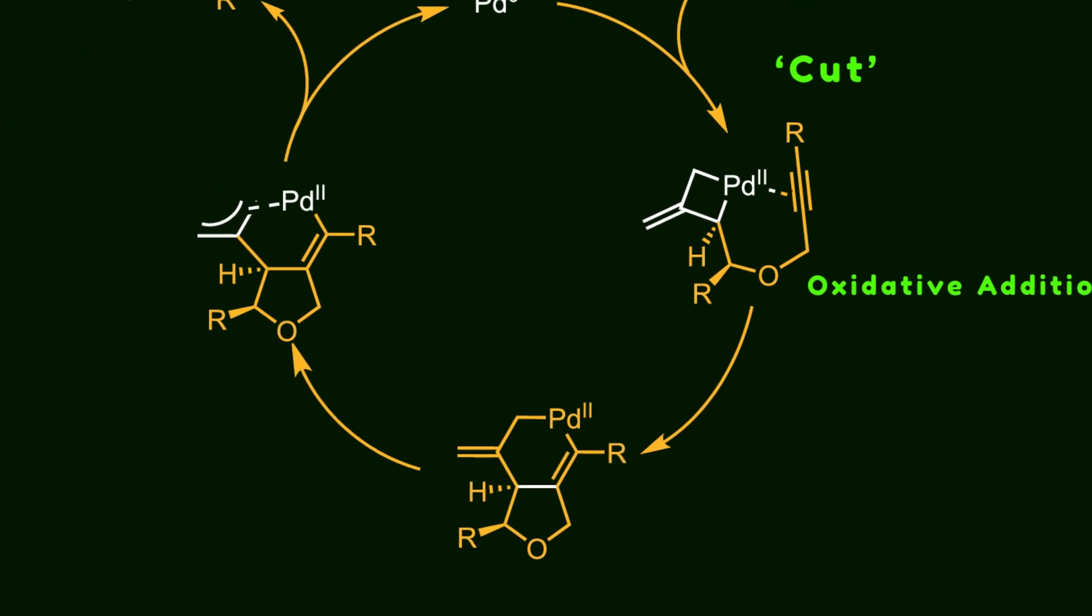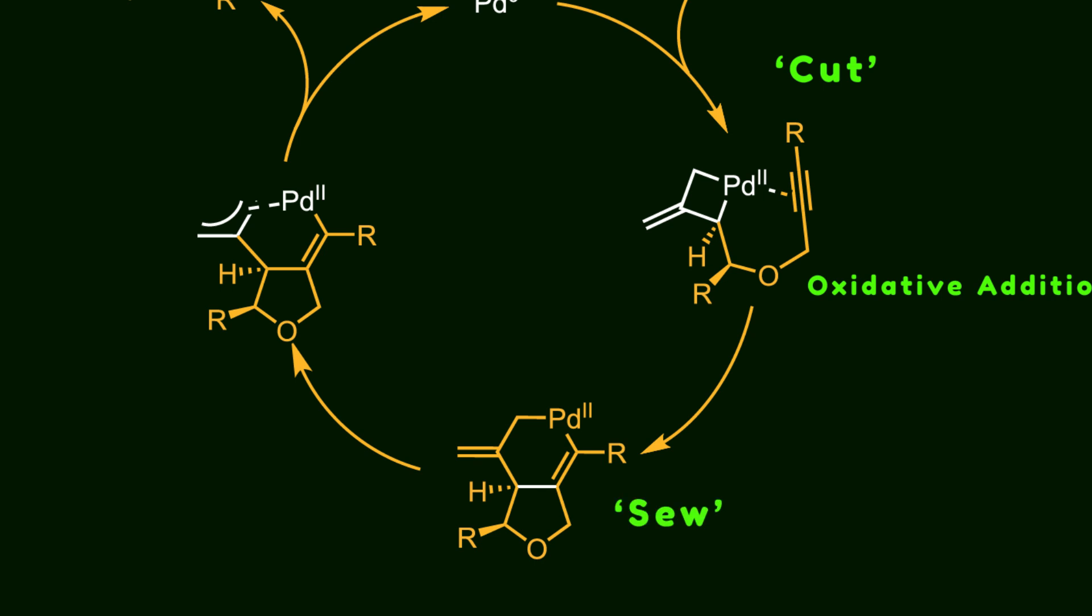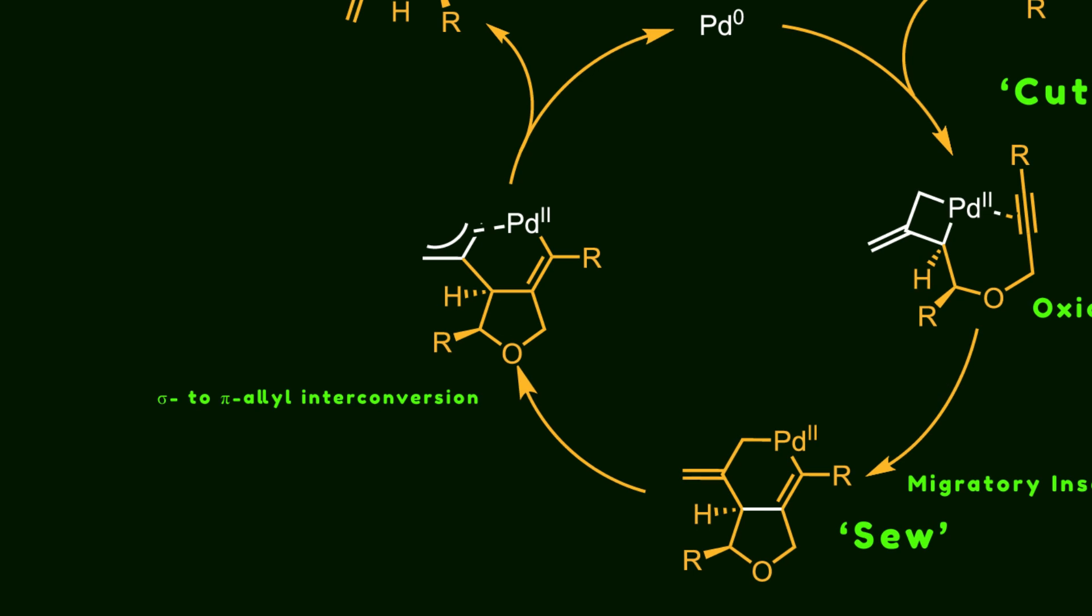Next, the first cyclization occurs in the stew process by alkyne migratory insertion. In the next step, a sigma to pi-allyl inner conversion occurs.